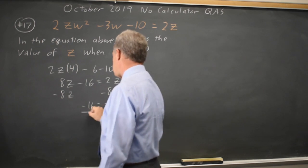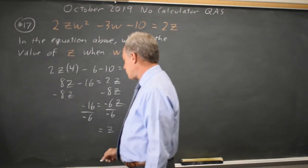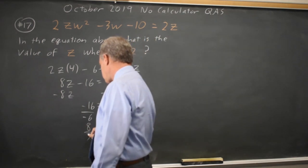Dividing by negative 6 I get z equals 16 over 6, is the same as 8 over 3.